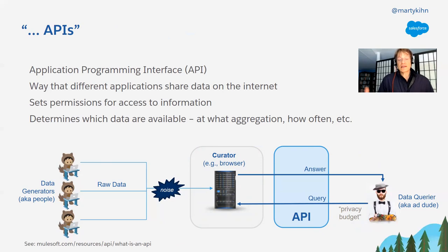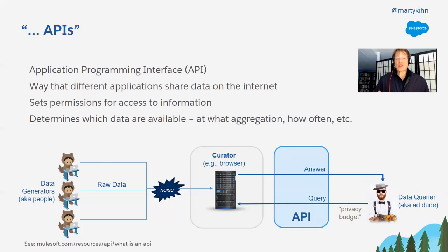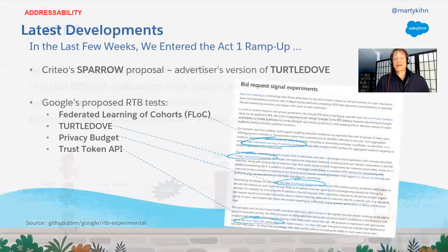APIs — everyone knows what they are — it's basically the way different applications on the internet can share data. APIs mean you're not sharing files of data, not sending CSV files, not doing server-to-server file transfers. With an API, it's setting a permission, giving people tokens, and the API is determining what data can be shared. A request is made and then it's sent back through the API. It's a very controlled world — you need permission to access the API, and you're being told exactly what you can and cannot share.